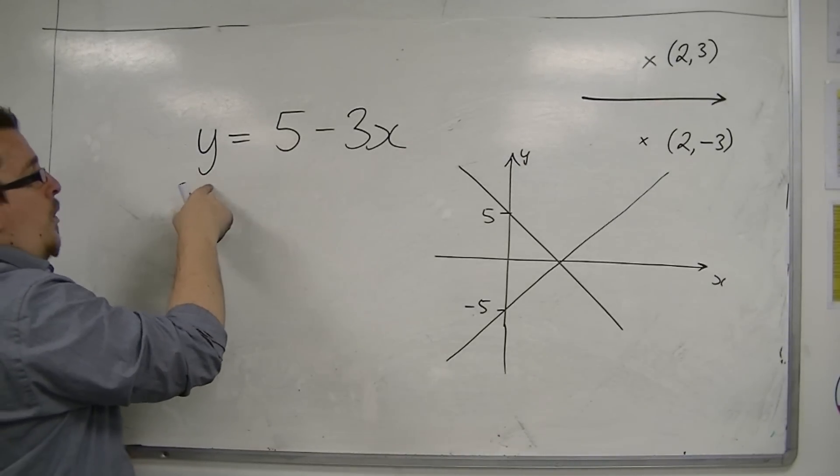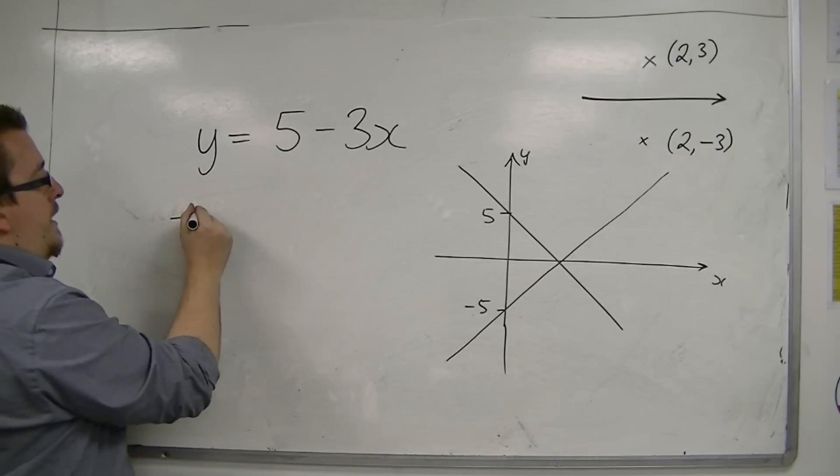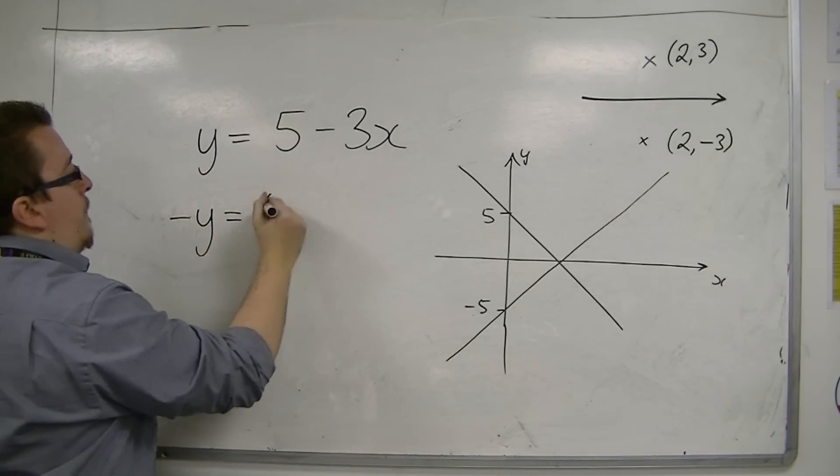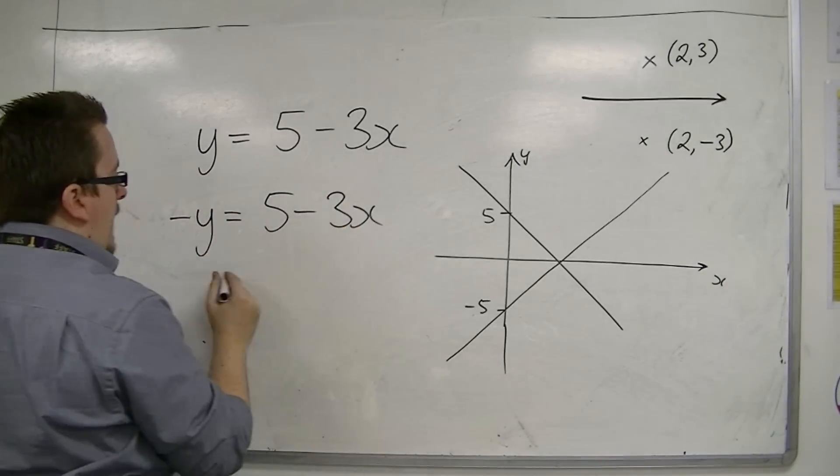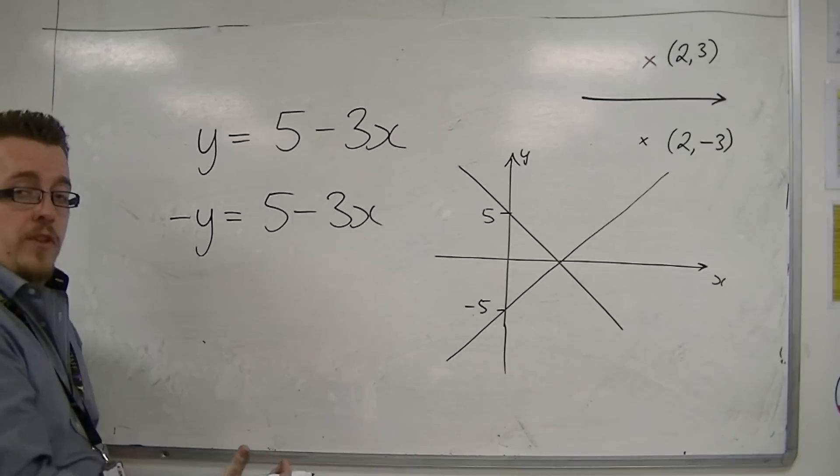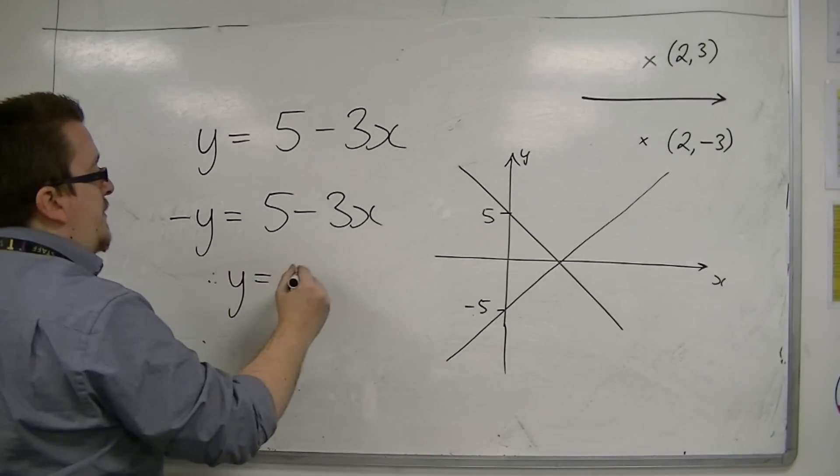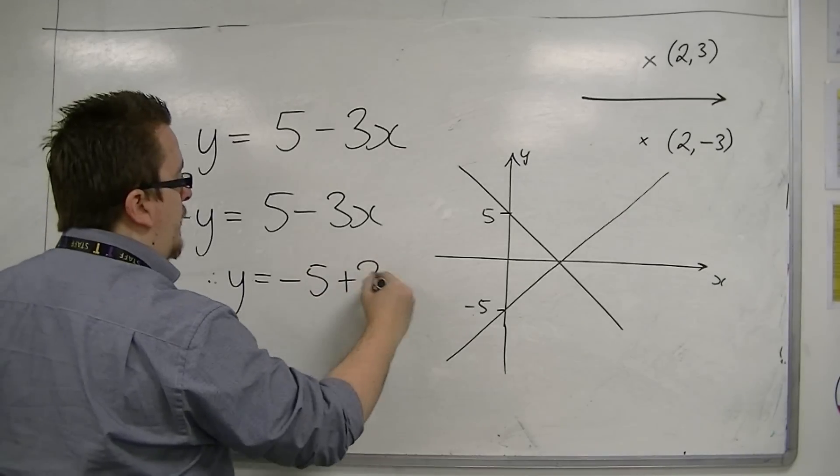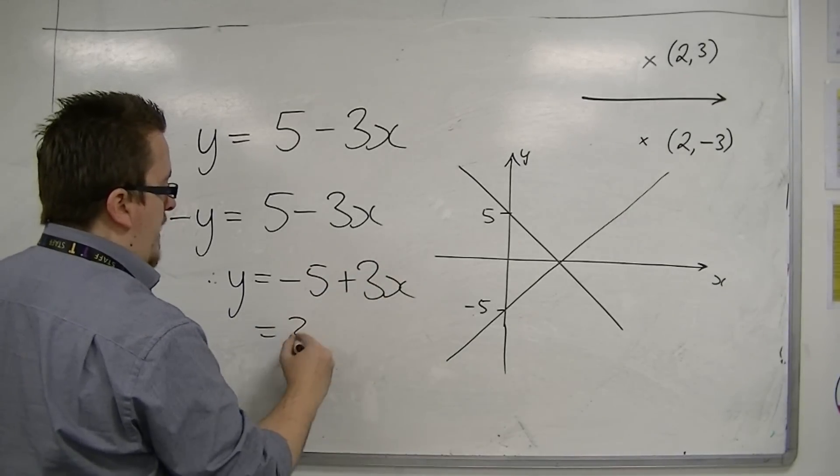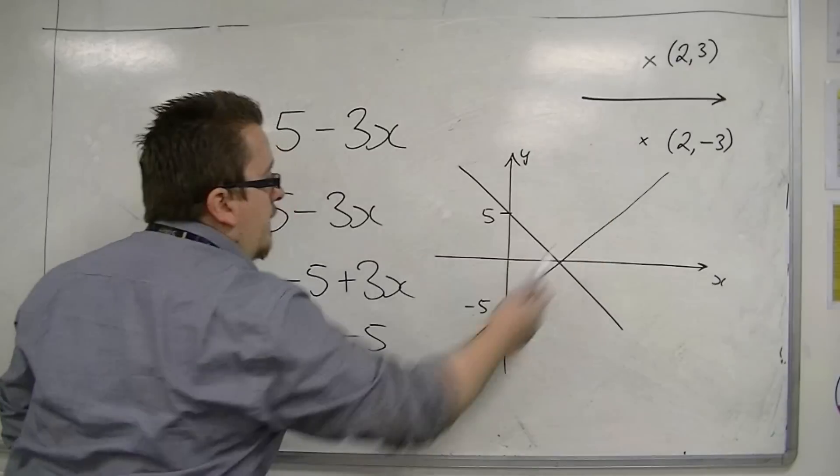If I replace the y with -y, and then multiply through or divide through by -1, we can write y = -5 + 3x, or just 3x - 5. And this is the equation of that line.